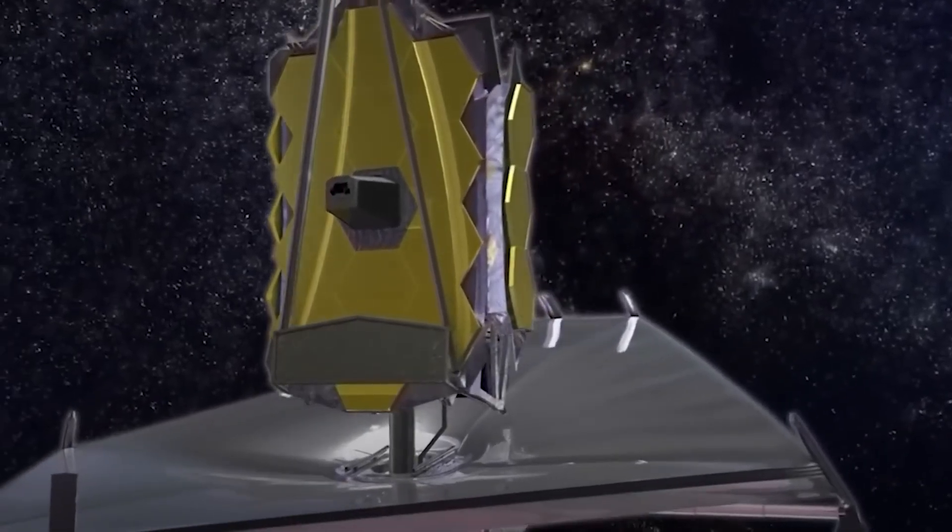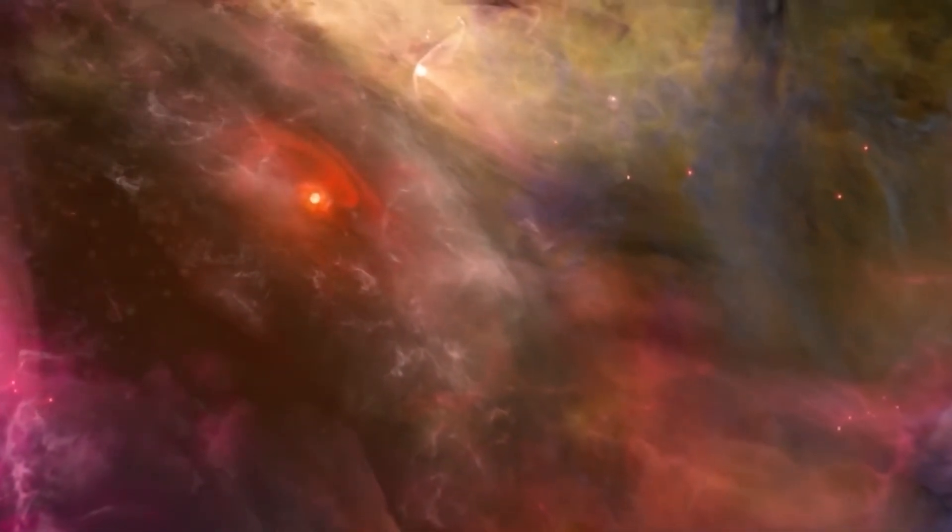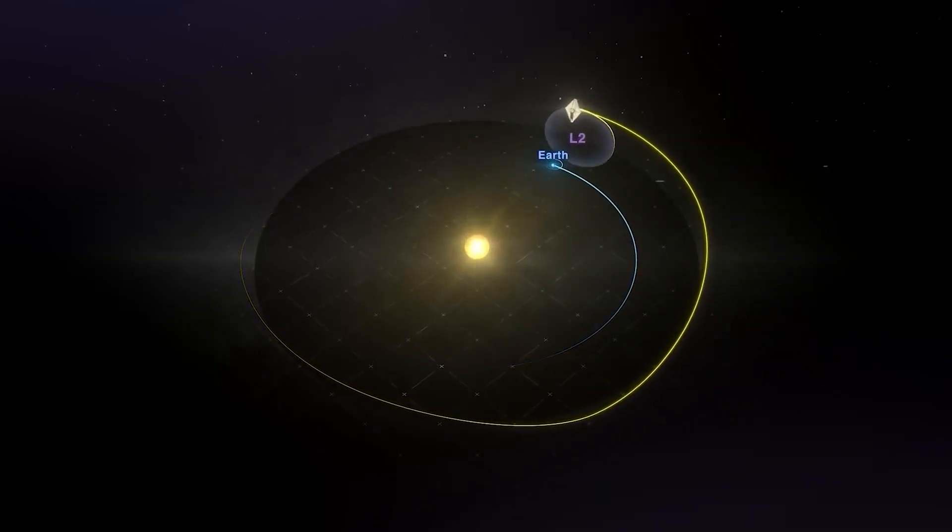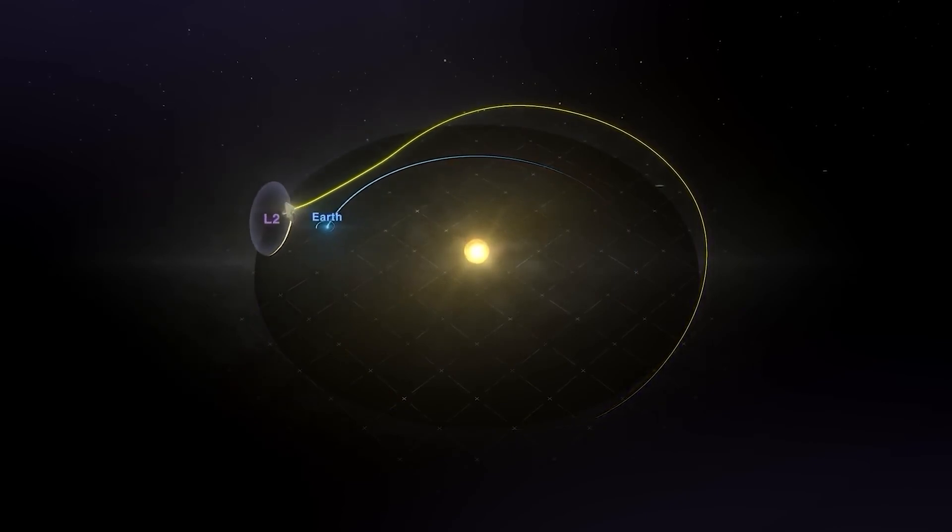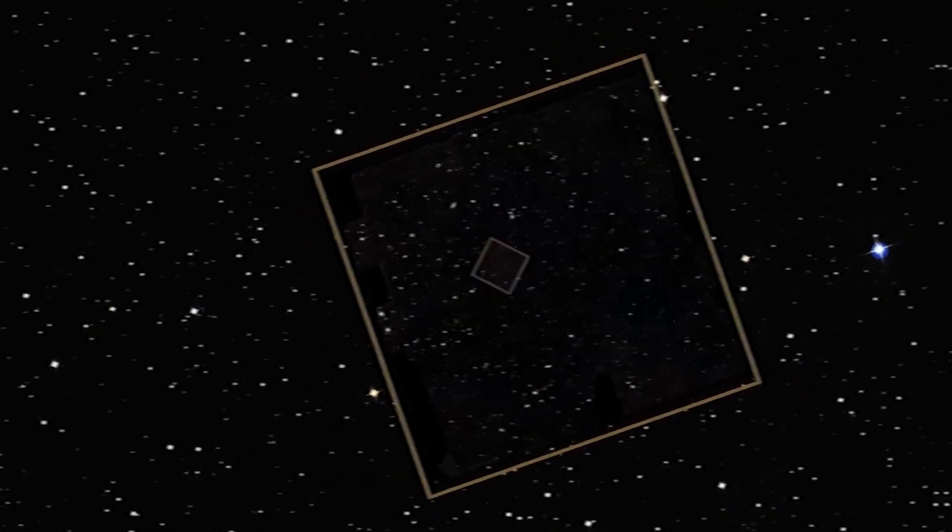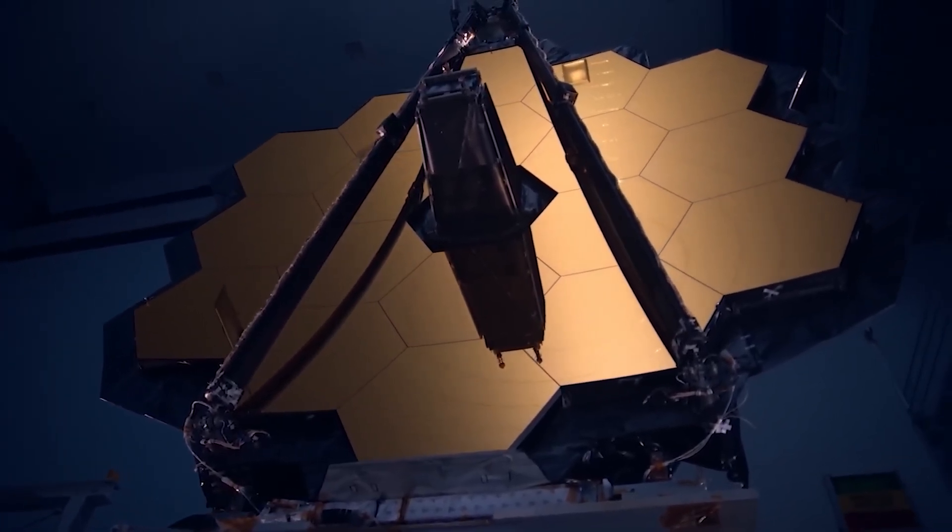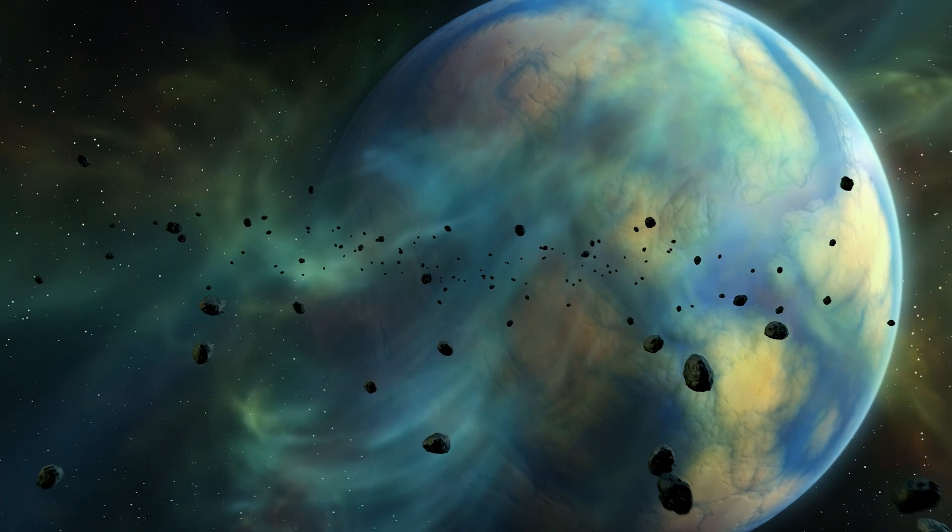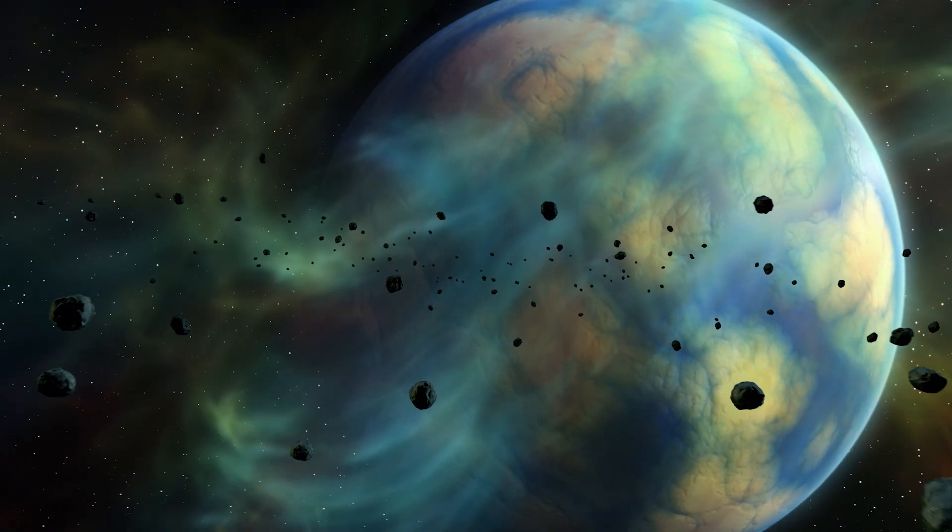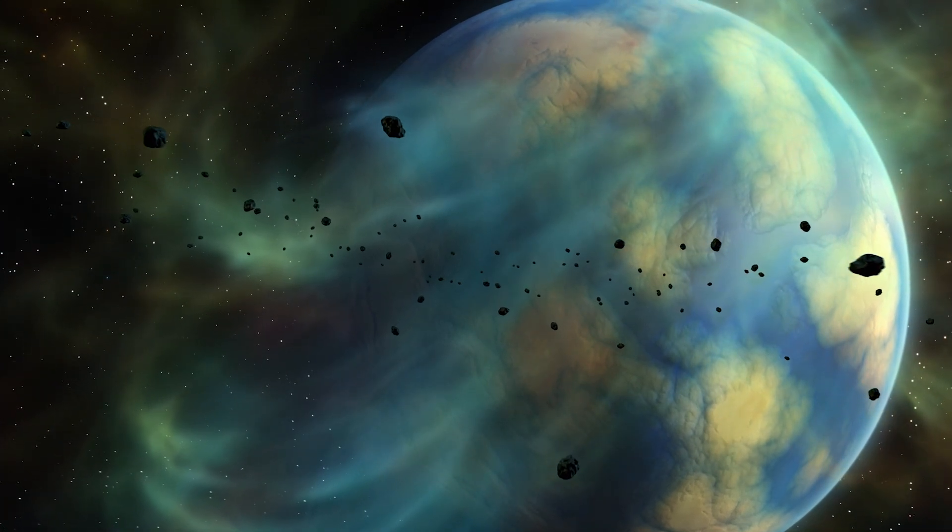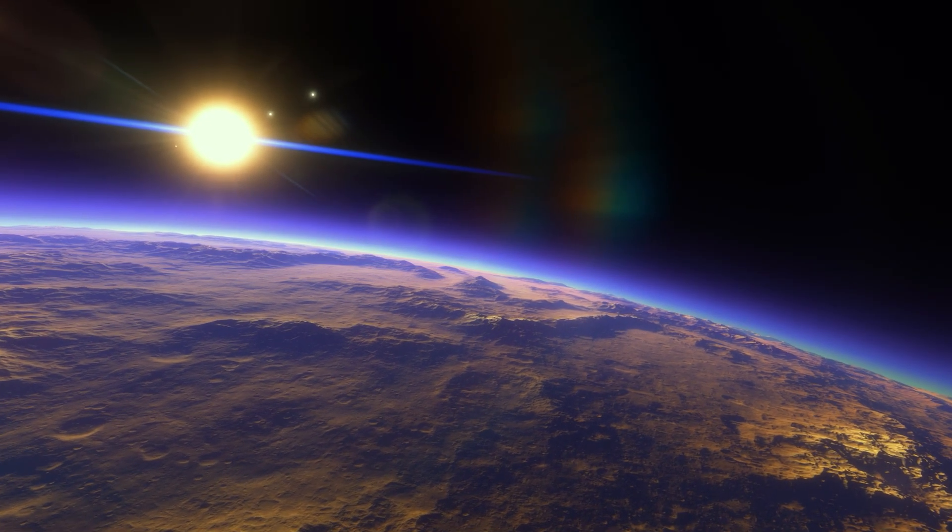What makes the Webb telescope so powerful? Part of this power comes from its 6.4 meter diameter mirror. This mirror is made up of 18 small pieces perfectly aligned. These segments are coated with a gold layer so thin that it is 1,000 times thinner than a single hair strand. 24 karat gold reflects infrared light better than other metals.